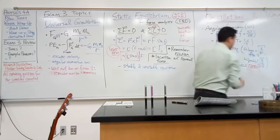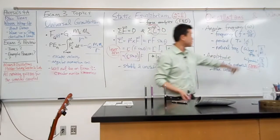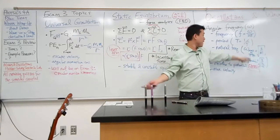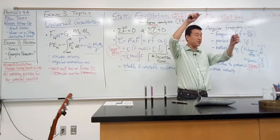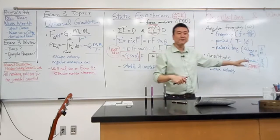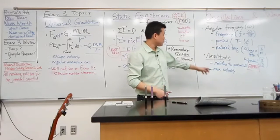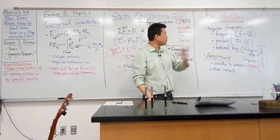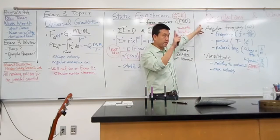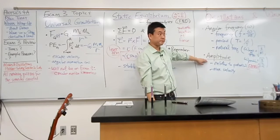Amplitude relates to potential energy — and I want to use this as a platform to say you really need to be familiar with energy in oscillation: how to express it. It's kind of a review of what you did for exam two. If it's a mass on a spring, then it's spring potential energy. If it's a pendulum, you have to work out the geometry. Over all the things introduced dealing with oscillation, if we had to pick one thing that relates most directly to energy, it's going to be amplitude.